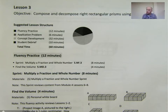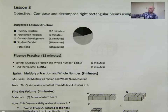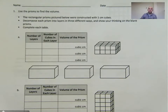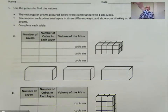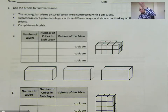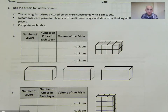We're going to compose and decompose right rectangular prisms using layers today. Let's look at number 1. It says use the prisms to find the volume. The rectangular prisms pictured were constructed with 1 centimeter cubes. Decompose each prism into layers in three different ways and show your thinking on the blank prisms. Complete each table. So we're going to look at how we can cut this prism into layers in different ways.